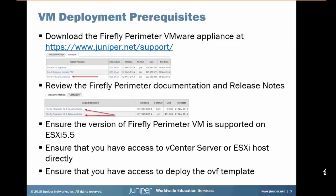Before you deploy the Firefly Perimeter VM appliance into your ESXi environment, I recommend checking a few things. First, you need to make sure you have the right version downloaded from the Juniper Networks support site. You should also ensure to read the documentation and release notes for the version you're downloading, and make sure that version is supported on ESXi 5.5 server. Next, you should have access to the vCenter server or your ESXi host directly from where you'll be deploying. Lastly, you should have access rights to deploy the OVF template into your VM environment.